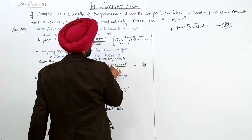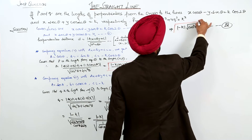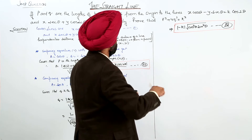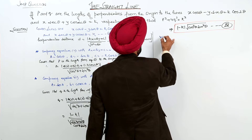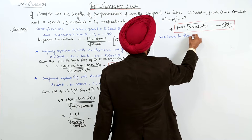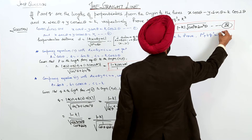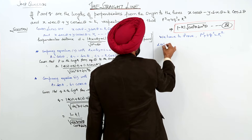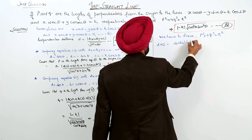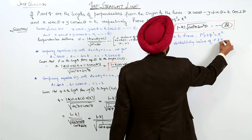Now using equation 3 and equation 4, we have to prove p² + 4q² = k². Taking the left-hand side and substituting the values of p and q: